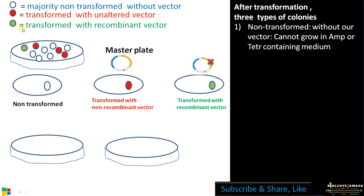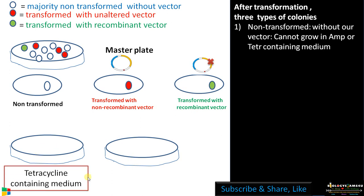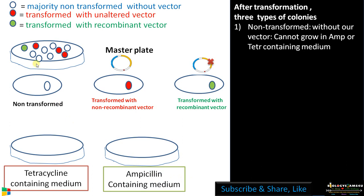Now let us select the colonies using different media. This is a master plate, and from the master plate we are making secondary plates using replica plating. Using a velvet surface, we press this region and transfer colonies into a tetracycline containing medium and an ampicillin containing medium, so that the positions of the colonies will be exactly the same.